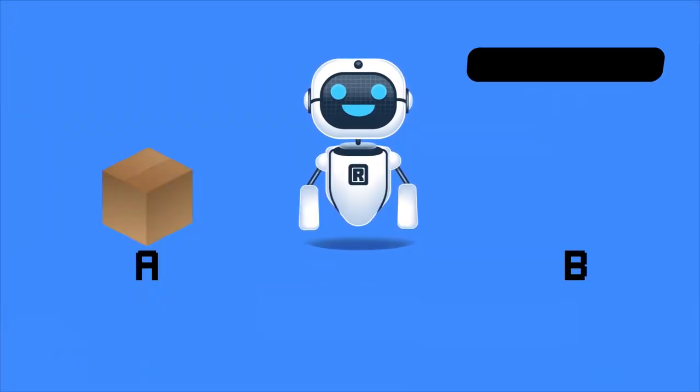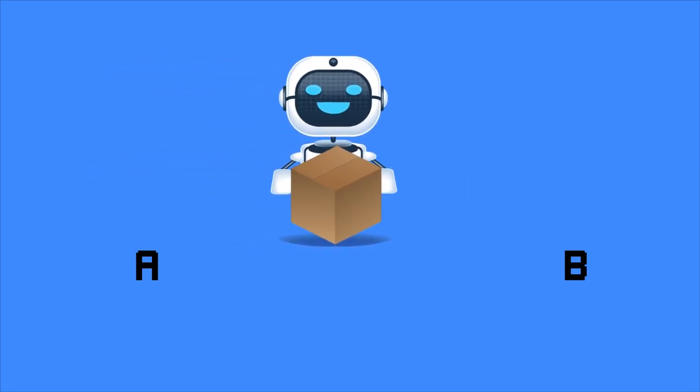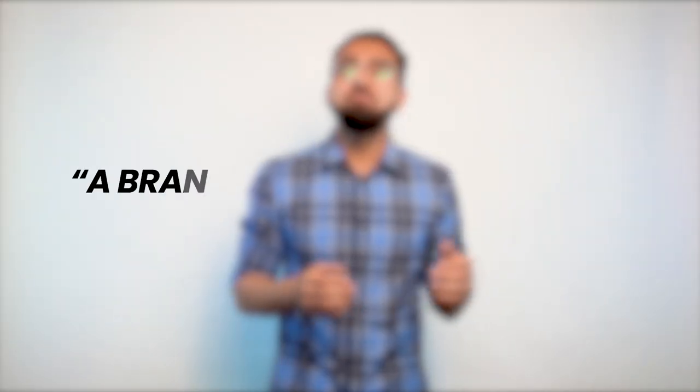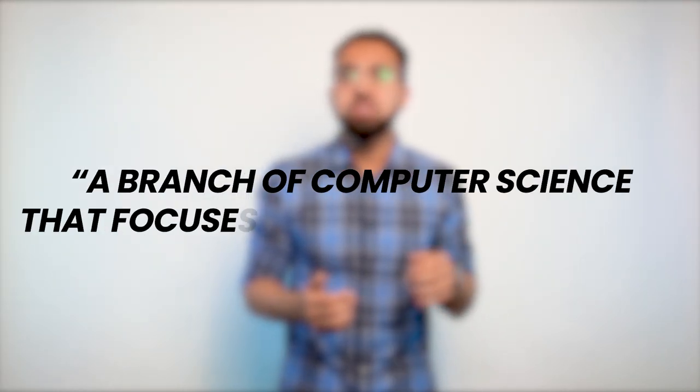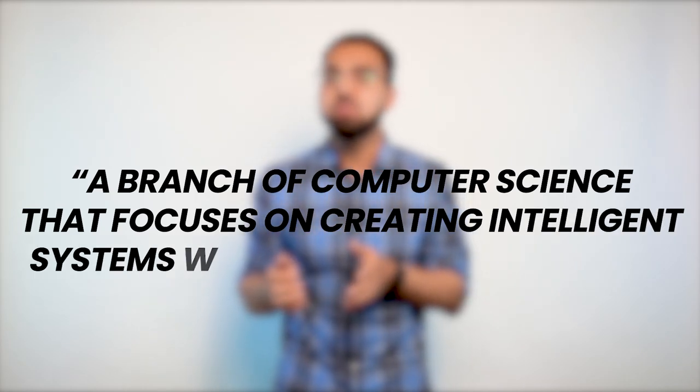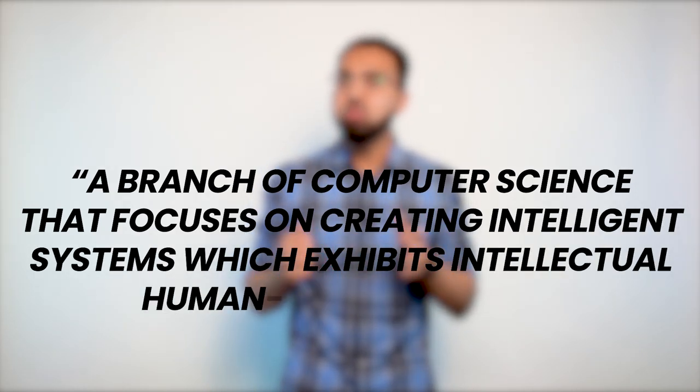So in traditional AI, what programmers do is they code a lot of instructions in a machine about the task it needs to perform. So in general, you can define AI as a branch of computer science that focuses on creating intelligent systems which exhibit intellectual human-like behavior. Or another way to say this is, any program which resembles or mimics some form of human intelligence is AI. But this is traditional AI, not machine learning. So what's the problem? Why do we even need machine learning?